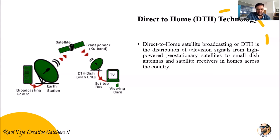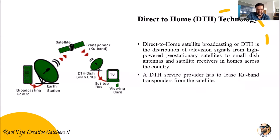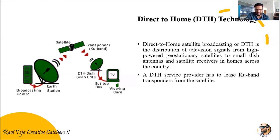That small dish antenna is situated on the top of a building, and it receives the satellite signals using satellite receivers. In homes across the country, this DTH service generally uses Ku-band transponders from the satellites. The satellites act as transponders — they transmit and receive signals — and for DTH service, the Ku-band is specifically utilized.